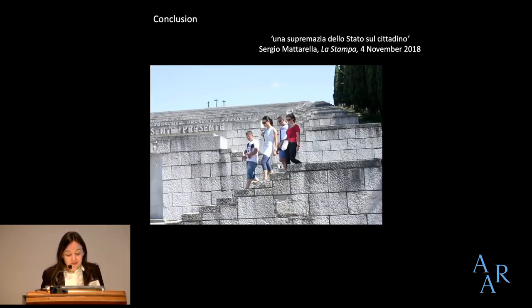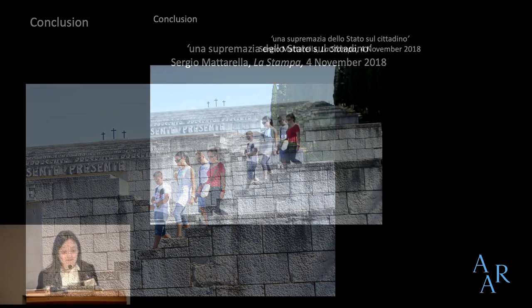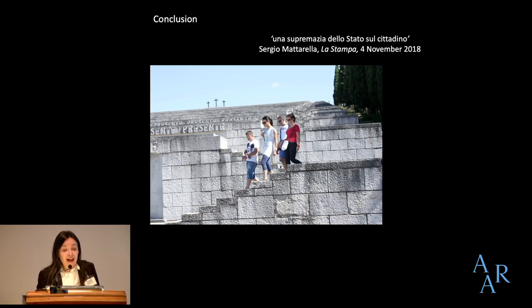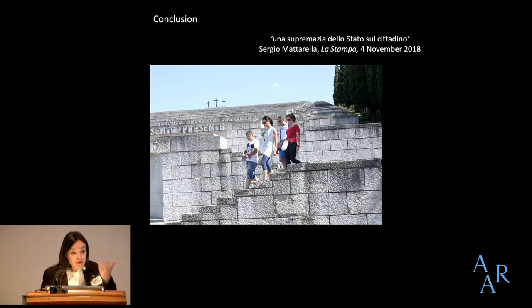To wrap up: the ossuaries were spaces where the regime reworked the contours of citizenship. Fallen soldiers were ideally suited to embody the body politic and represent fascist citizenship. They were symbols of Italianità, symbols of the subordination of the individual to the state, and exemplars of civic morality. It's hard to know what remains today of fascist notions of citizenship, but undoubtedly those notions have left traces from the Second World War up to the present. We might think about how citizenship has been rethought in the face of immigration, globalization, and decolonization.